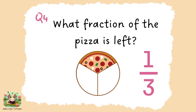Question four: one third of the pizza is left. The denominator at the bottom — the three — shows how many equal parts the pizza has been divided into. And the numerator, the number at the top — the one — is how many parts are left. So one third.